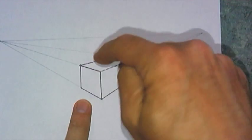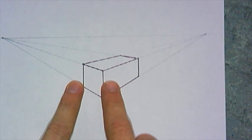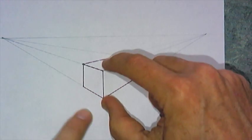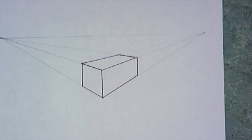Since I can see the top, that means my horizon line is above. If I needed to see the bottom, then I would, of course, have to have my horizon line below. You also could have the horizon line going through. That means that I can't see the top or the bottom at the same time.